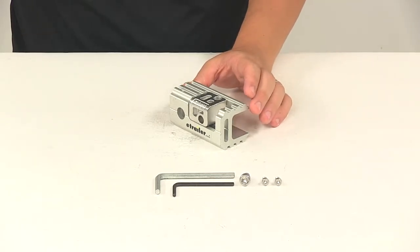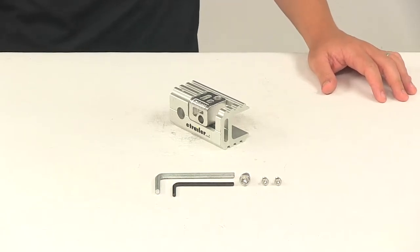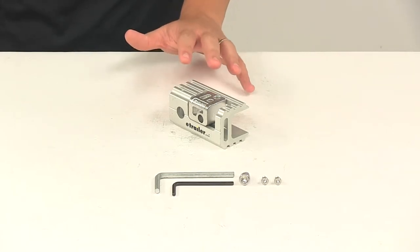This adapter kit converts the inch and a quarter shank on your Yakima Ridgeback or Full Tilt Bike Rack, manufactured after November 2015, for use with a two inch hitch receiver.